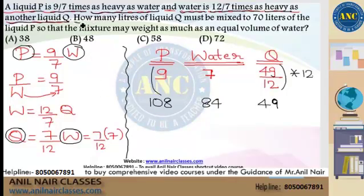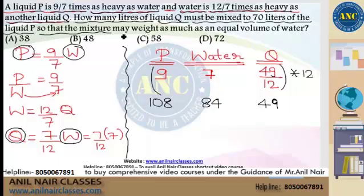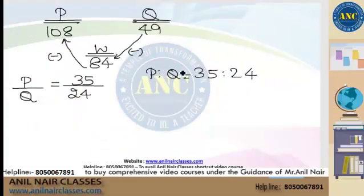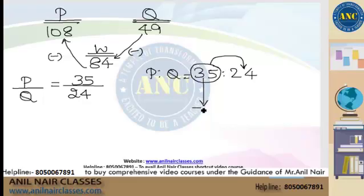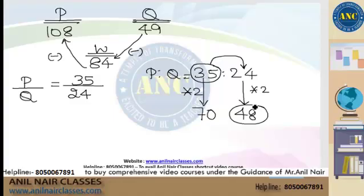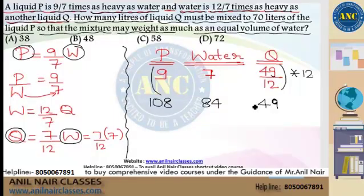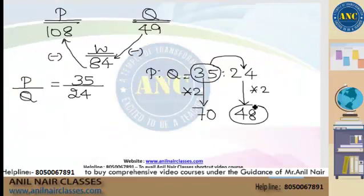Reading the next part of the question: how many liters of liquid Q must be mixed with 70 liters of liquid P so that the mixture may weigh as much as an equal volume of water? According to the ratio, 35 liters of liquid P is mixed with 24 liters of liquid Q. But the question says liquid P should be 70 liters. So 35 multiplied by 2 is 70, and 24 multiplied by 2 is 48. The answer is 48 liters of liquid Q.